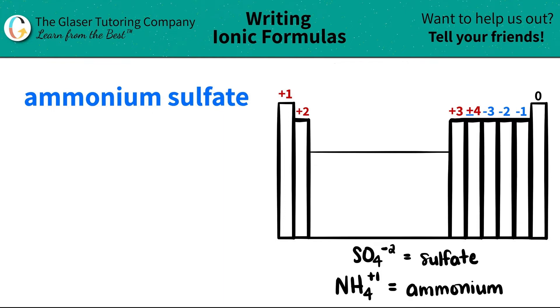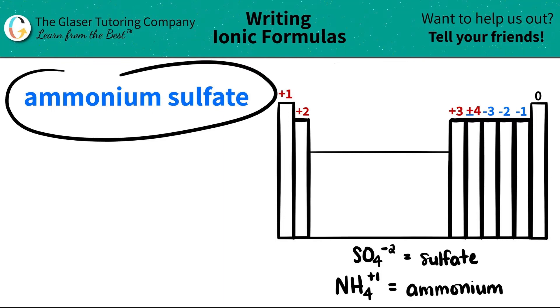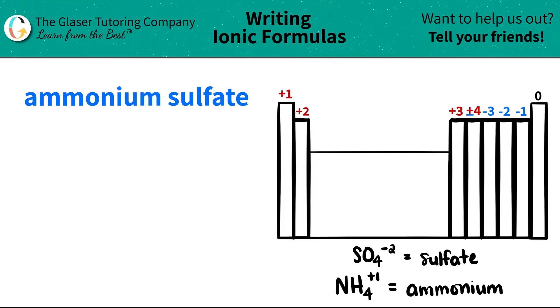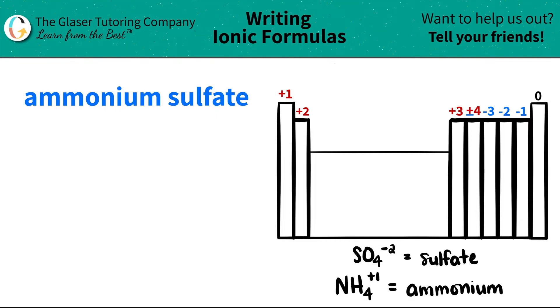Today we are going to be writing the formula for the ionic compound ammonium sulfate. So let's work from left to right. Ammonium comes first. Now if you scan the periodic table, you'll never find ammonium on the periodic table.